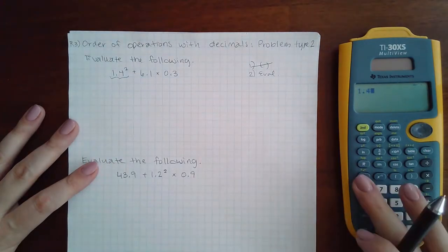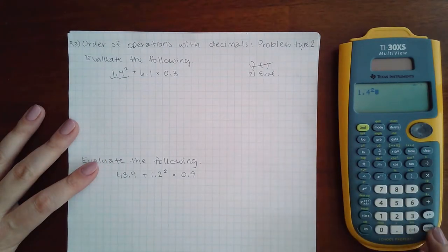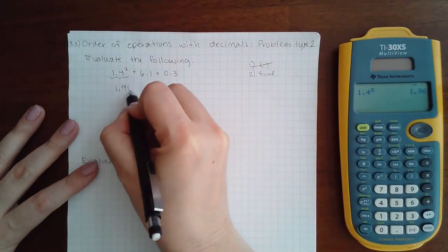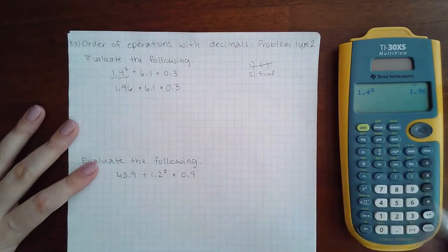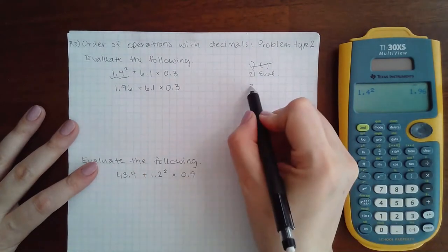So I'm going to enter my calculator exactly the way it looks on my paper and I get 1.96. Then I'm going to rewrite the rest of the problem. Then the next step is to do multiply and divide from left to right.